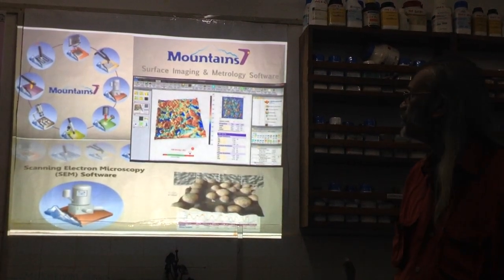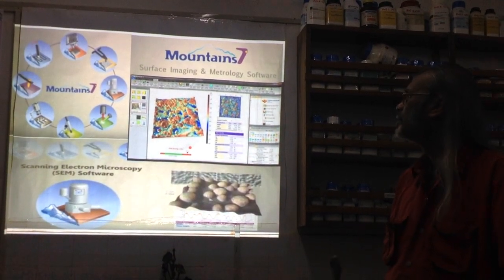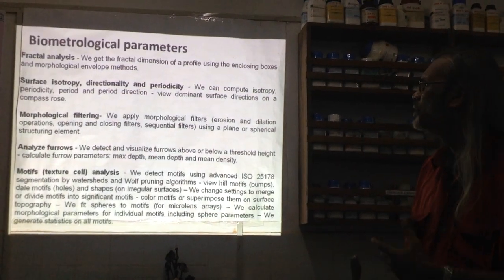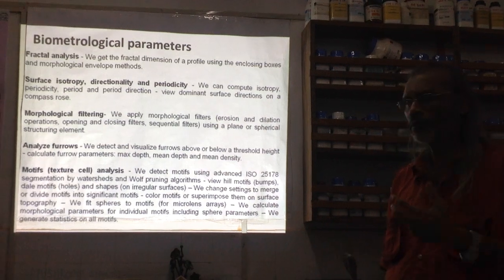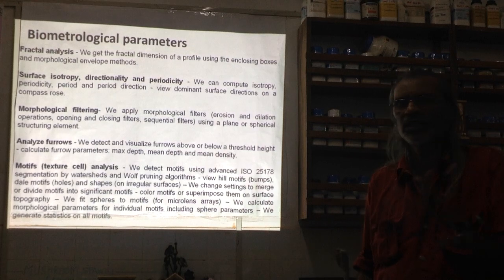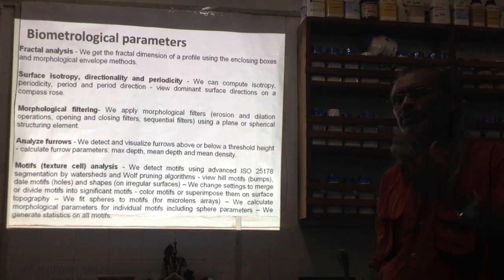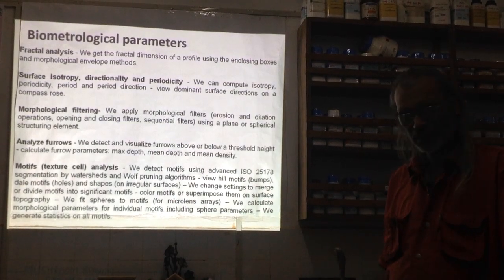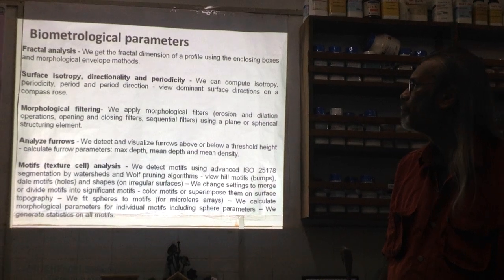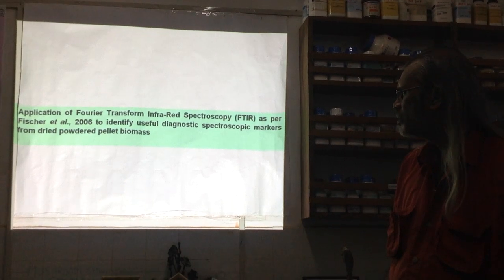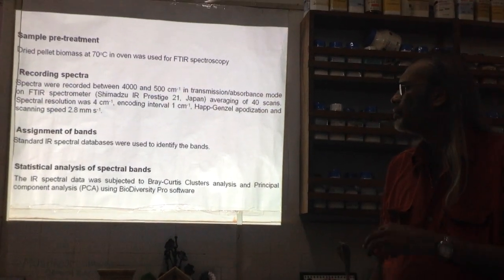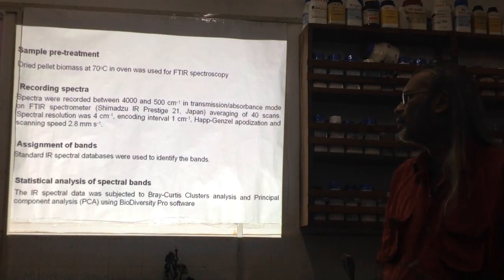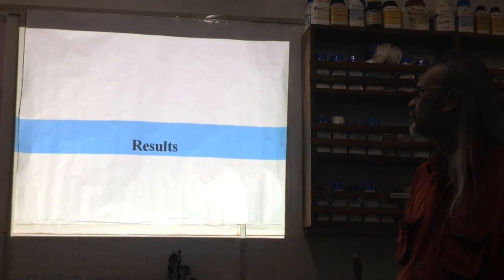SEM sample preparation involved sputter-coating for sharp, clear images, which were then subjected to analysis using the biometrology software. Permission was obtained to use this software, which we self-taught and which gave a mine of information. The biometrological parameters are dictated by the software; we feed, process, and get output data and subject it to further statistical analysis. These include fractal analysis, surface isotropy, morphological filtering, and analysis of furrows and motifs — all standard nomenclatures in biometrological studies. For FTIR: sample was free of moisture, spectra were recorded, bands assigned, and subjected to statistical packages.